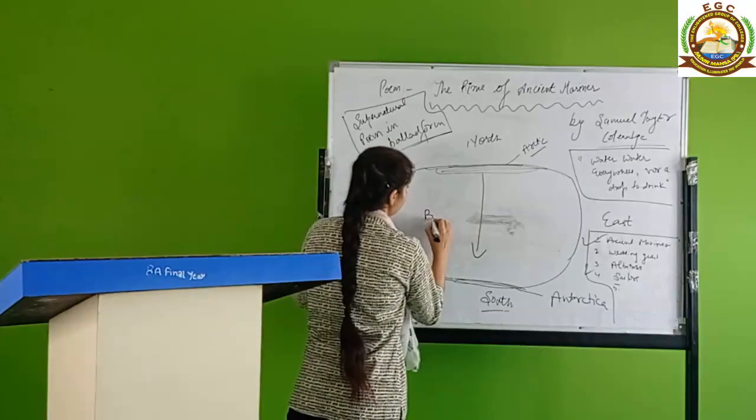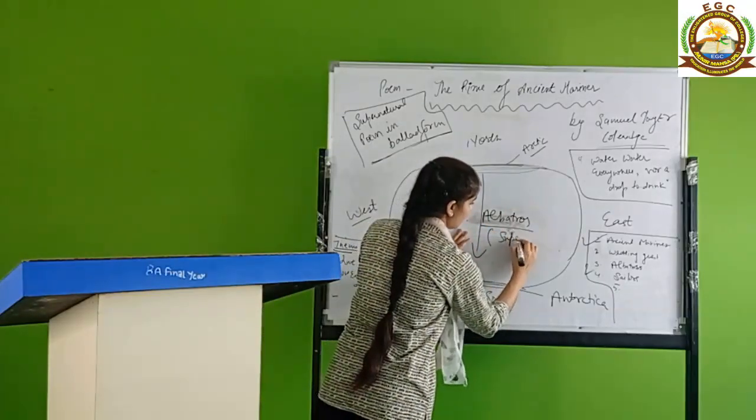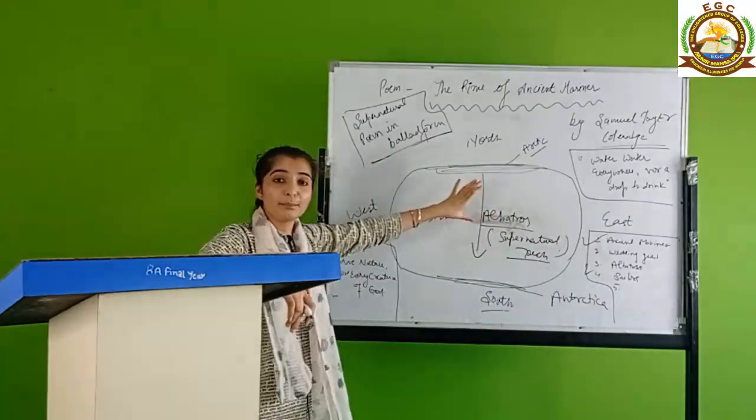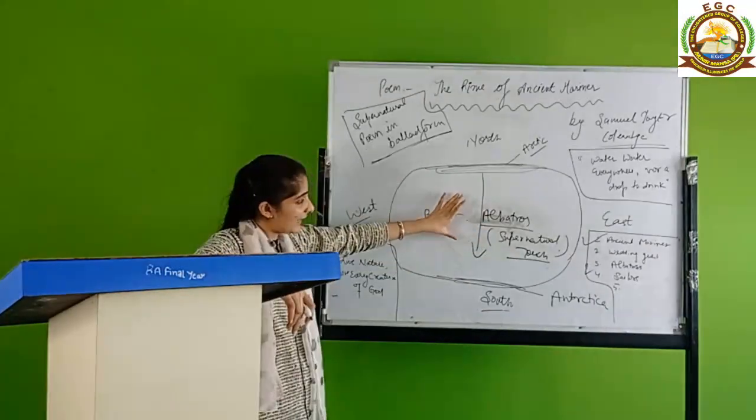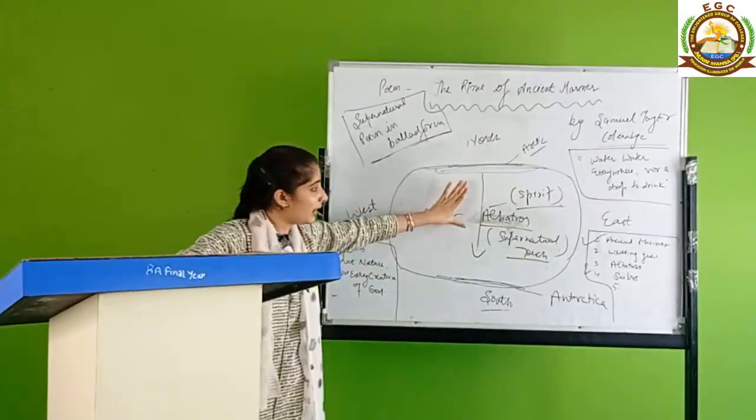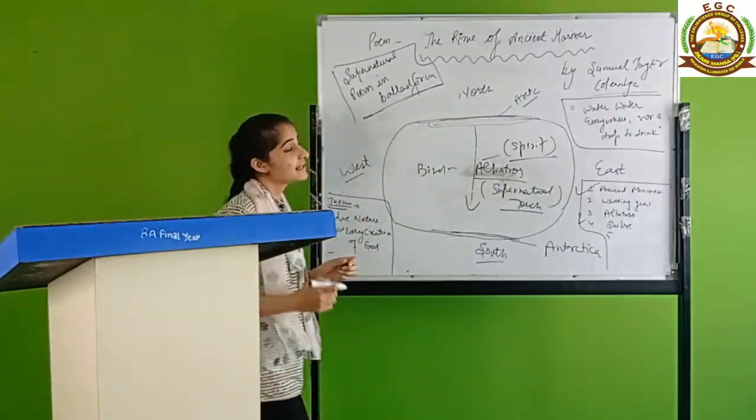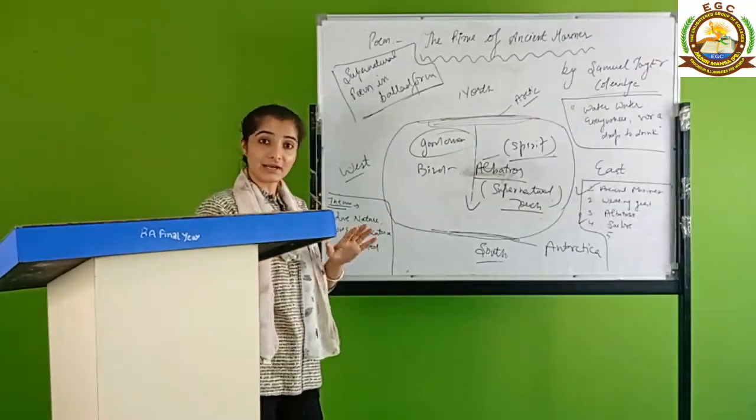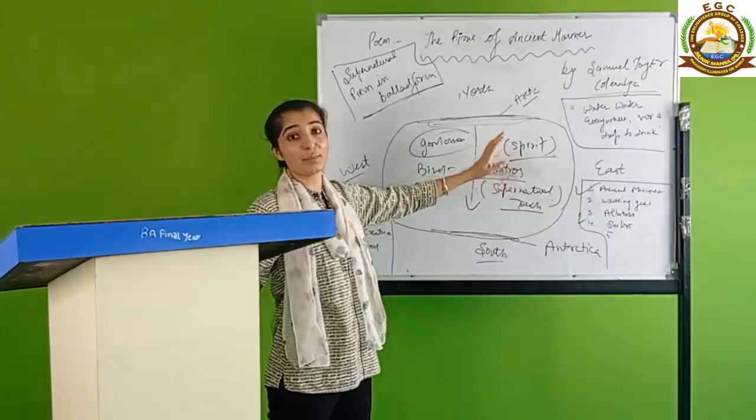After that, a bird appears called albatross. Albatross is a bird that appears in this poem - this is the supernatural touch. It's not actually a bird, it represents a spirit. When the albatross comes to their ship, all the mariners think that this bird coming to our ship is a good omen, an auspicious sign. The sailors say this albatross bird coming to our ship is a good sign.